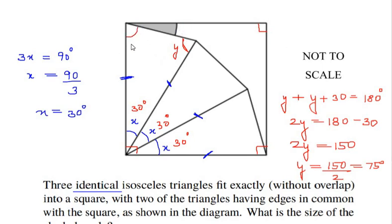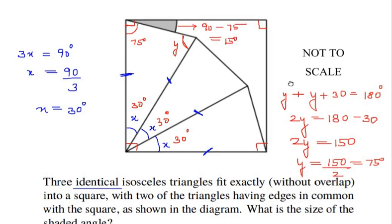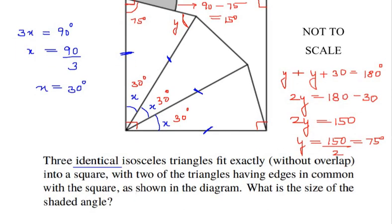This angle is 75, but we had already seen that the corner angle of the square was 90 degrees. To find the small angle, we are just going to subtract 75 from 90 degrees. So 90 minus 75 gives us an angle of 15 degrees. So here we have the size of the shaded angle as 15 degrees.